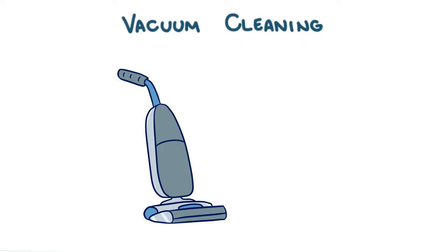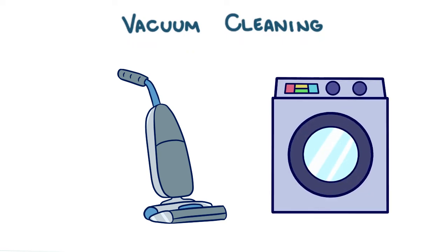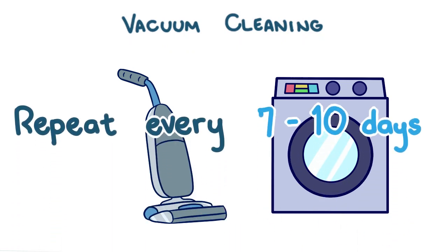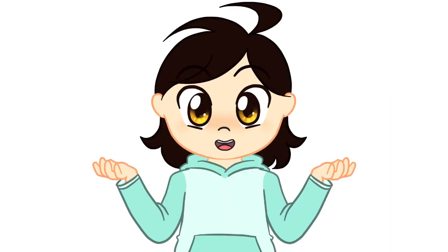The pet's bedding, blankets, and carriers should also be cleaned and washed thoroughly. These methods of environmental control can be repeated every 7 to 10 days to make sure to catch any fleas that are just emerging from their cocoons.